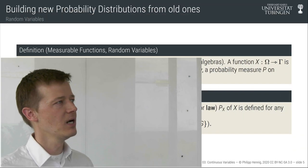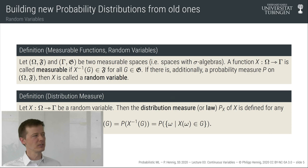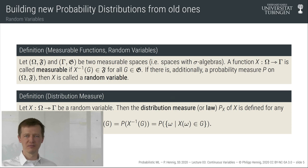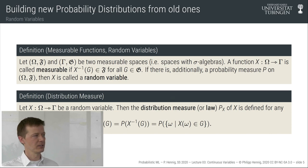These kinds of variables will be called random variables, and we will construct them formally. I'll define two concepts — measurable functions and random variables — and then use these to define the probability on the derived variable, which is called the distribution measure or law of the random variable.